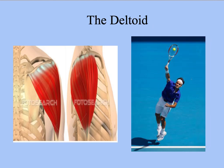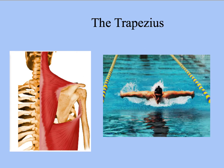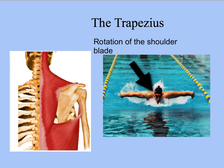The deltoid gives our shoulder its rounded shape. When it contracts, it is responsible for abducting the upper arm away from the body. As seen with Roger Federer, he abducts his upper arm to perform the serve, lifting his arm above his head. The trapezius muscle is attached to the head and neck at the top and the shoulder below. Its main function is to rotate the shoulder blade, with the most common sporting movement being the butterfly arm action in swimming.